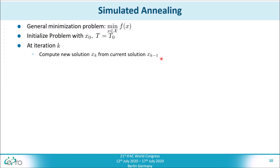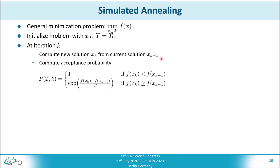After having obtained the new solution, we compute the temperature-dependent acceptance probability function. This function p is equal to 1 if the objective value of the new solution is better than the objective value of the current solution. Otherwise, it is computed through an exponential term depending on the objective values of the two solutions and the temperature.